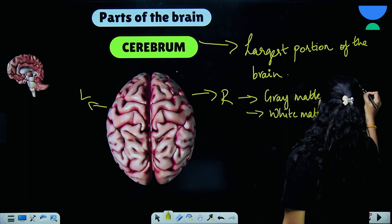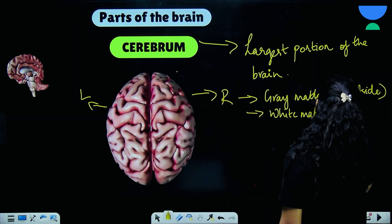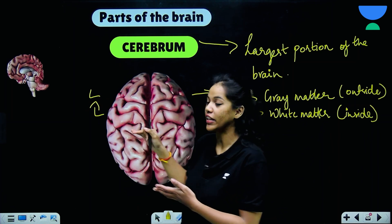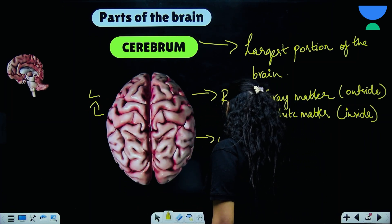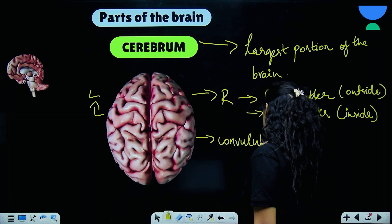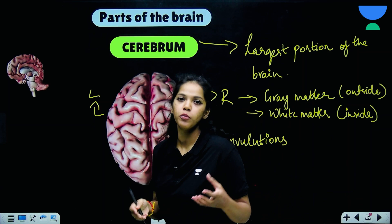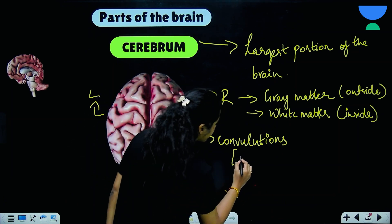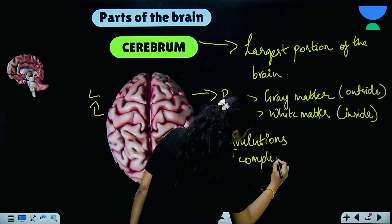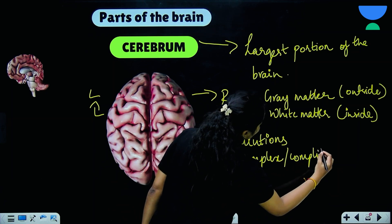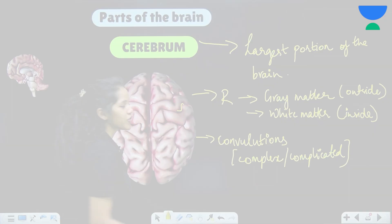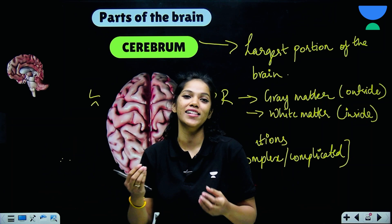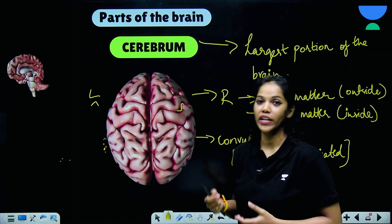The folds on the outside of the cerebrum's grey matter are called convolutions. Convolutions means complex or complicated. Interestingly, the more convolutions on the grey matter of the brain, the more space there is for nerve cells, and it is believed this indicates higher intelligence.